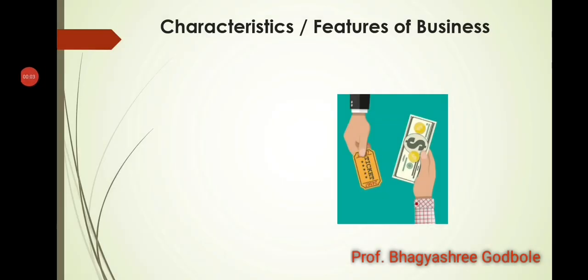Now let us see the features or characteristics of business. The first one is economic activity. Any activity will be considered a business only if it is an economic activity — that is, if we are doing it with the purpose of earning money or profit. For example, if I am a teacher giving tuitions to students at home and charging fees, that is an economic activity. But if I am teaching my sister without charging fees, with the objective that she passes with good marks, that will not be considered an economic activity and hence not a business.